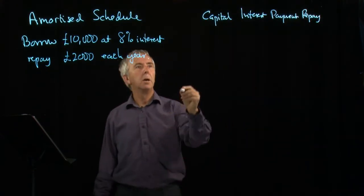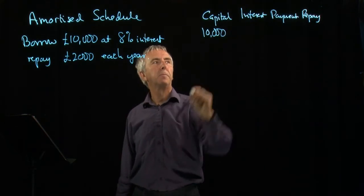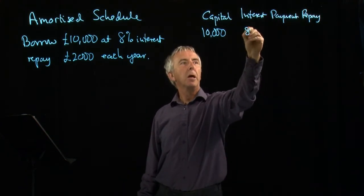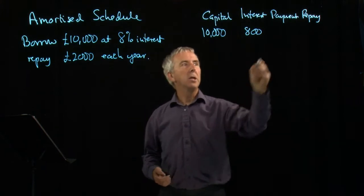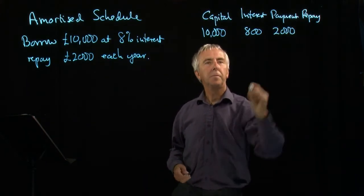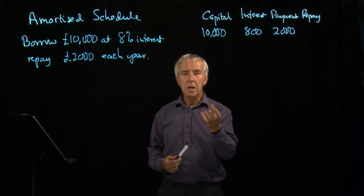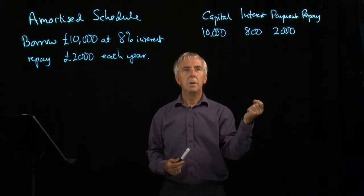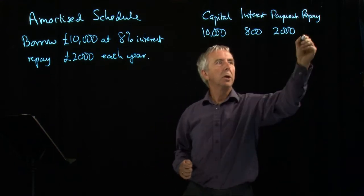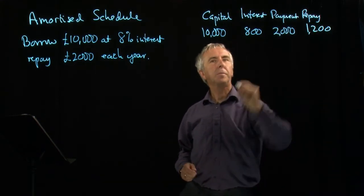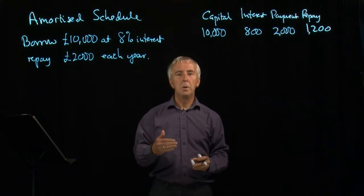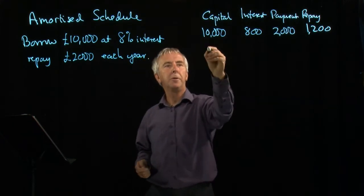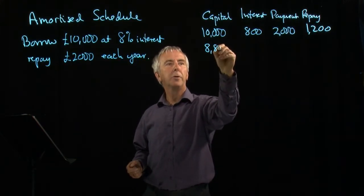In the first year, I owe £10,000. Interest is 8%, so 8% of £10,000 is £800. I pay £2,000, but out of that £2,000, £800 is taken as the interest I owe — that's their first claim. That leaves £1,200 that I've actually repaid. So at the beginning of year two, I've only repaid £1,200 out of the £10,000 and I still owe £8,800.